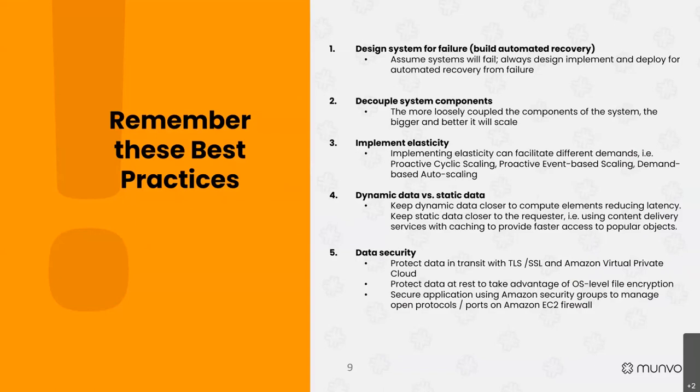Best practice number two: decouple system components. If you want to reduce redundancy in your company, decouple what each function is doing — focus each component application on what it needs to do and use whatever's already out there. This builds a practice of reusable, modular components that are better and easier to scale. This is basic software engineering, but it's especially important when going to the cloud, where you want to abstract and scale up.